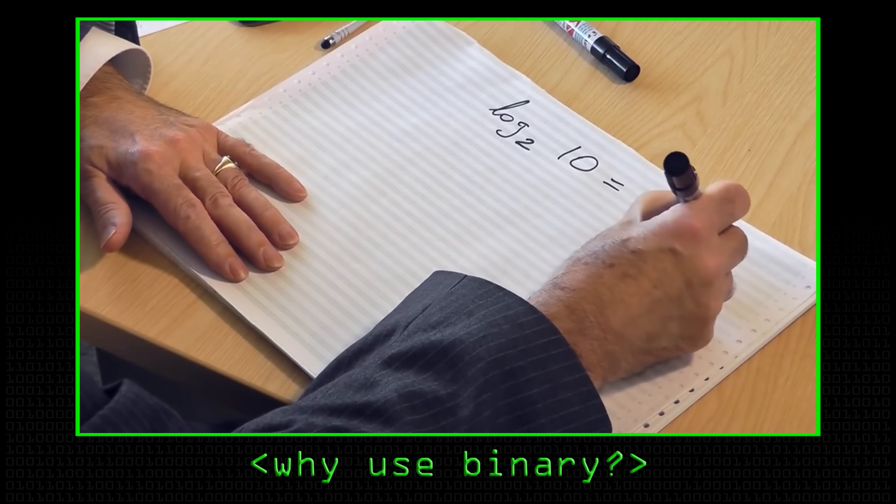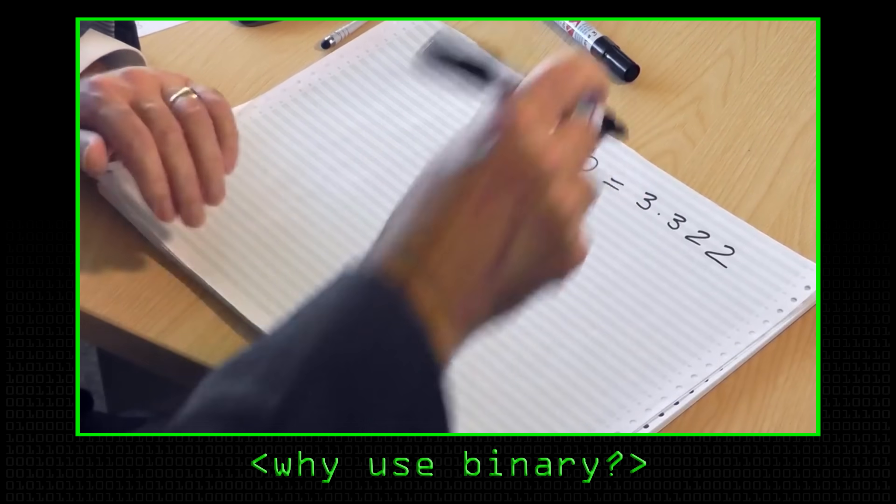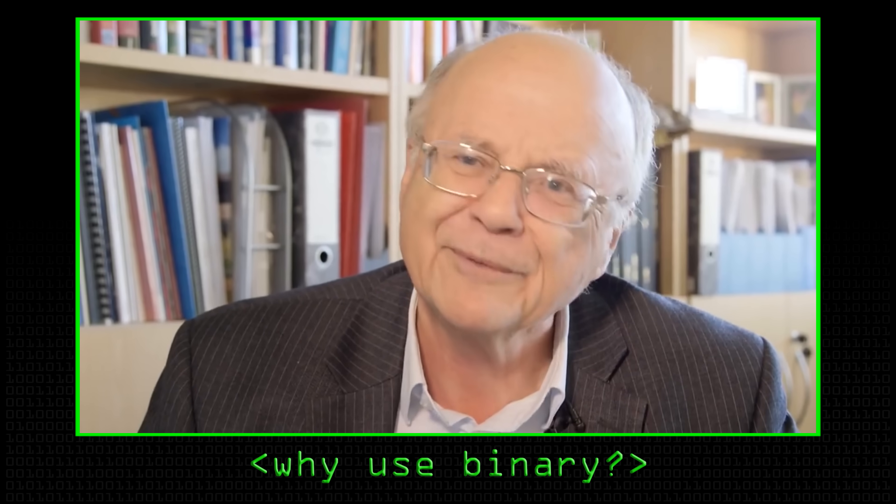Remembering the rule of 3.322 — which I don't have on my t-shirt this time, sorry about that — if anybody wants to produce a t-shirt with that on, I might even buy one. The 3.322 is the multiplying factor for how much more binary circuitry you need in your arithmetic unit to be able to do things in binary arithmetic rather than decimal arithmetic.